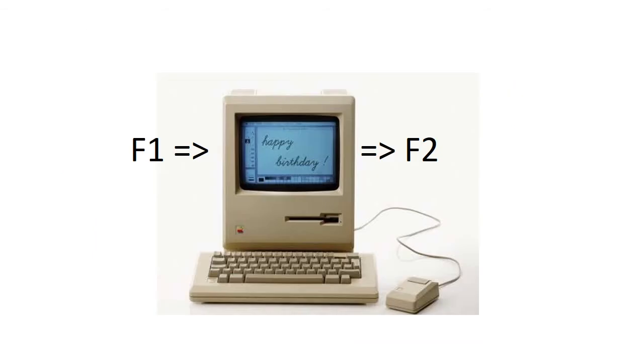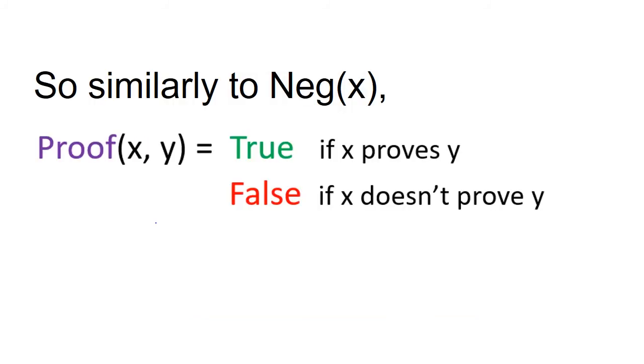Another thing to note is we can determine using computer programs whether for two formulas f1 and f2, f1 is a proof of f2, since proofs and logic are basically just logical formulas themselves. Using this fact, we can have a function proof of x which returns true if the formula associated with the number x proves the formula associated with the number y, given they are valid formulas.